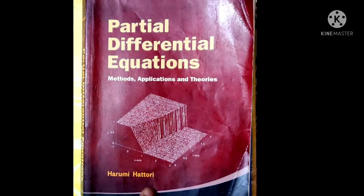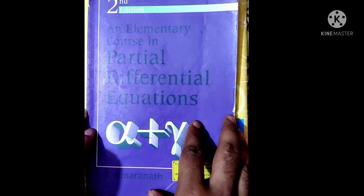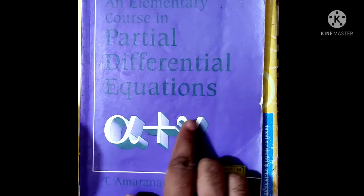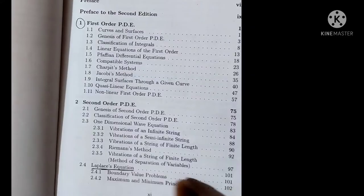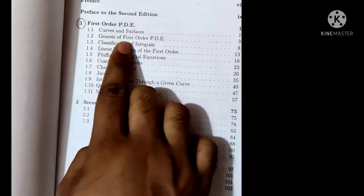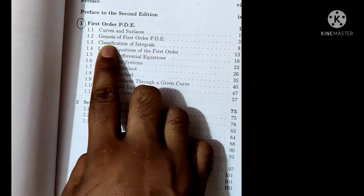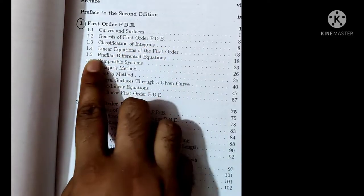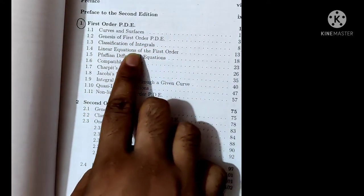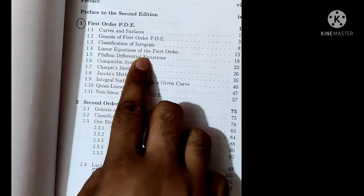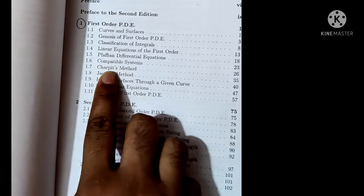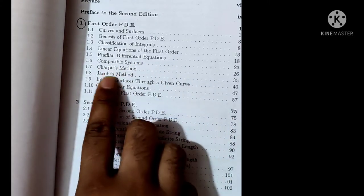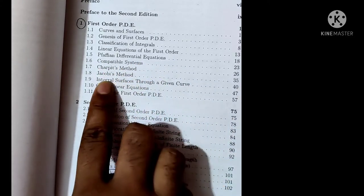The next book is 'An Elementary Course in Partial Differential Equations' by T.M. Amaranath. Topics include curves and surfaces, genesis of first order PDEs, classification of integrals, linear equations of first order, Pfaffian differential equations, compatible systems, and Charpit's method.